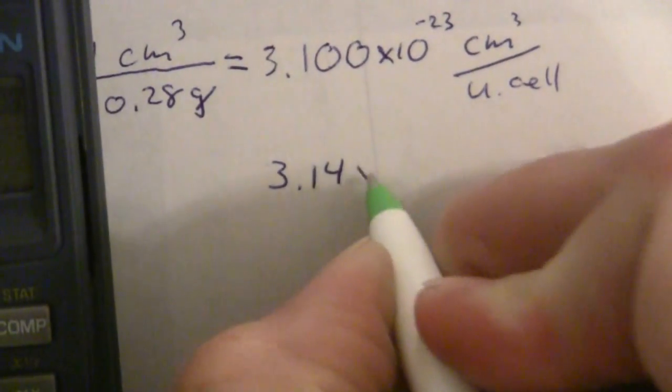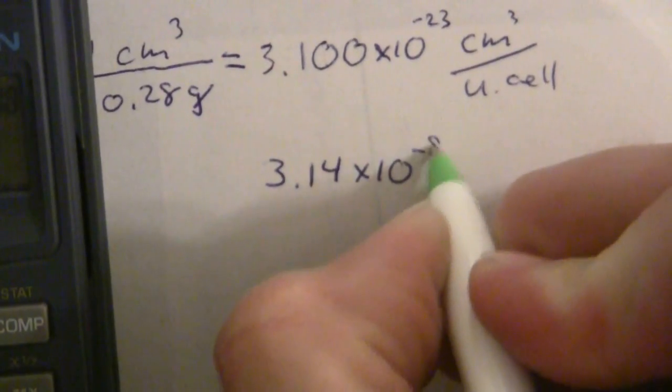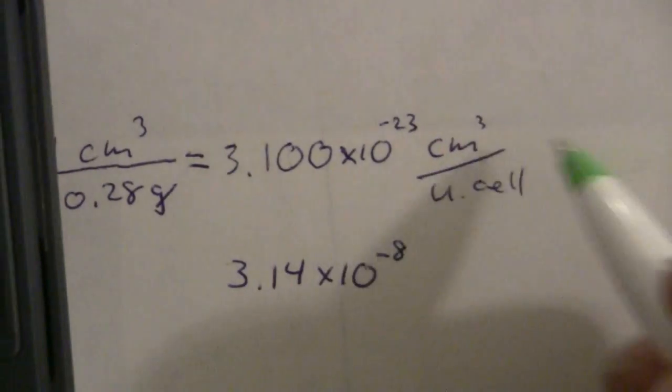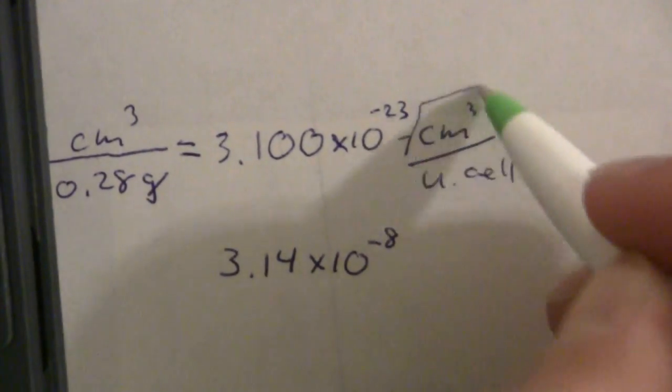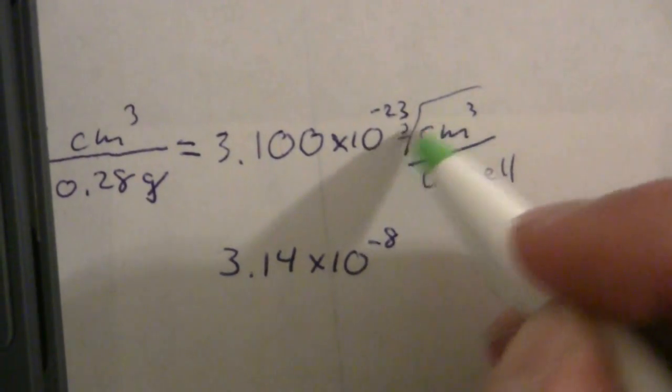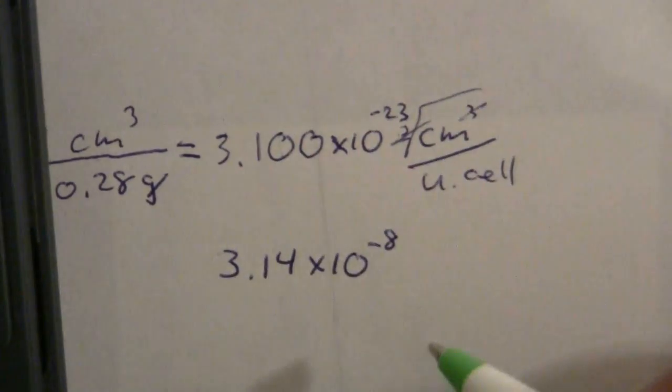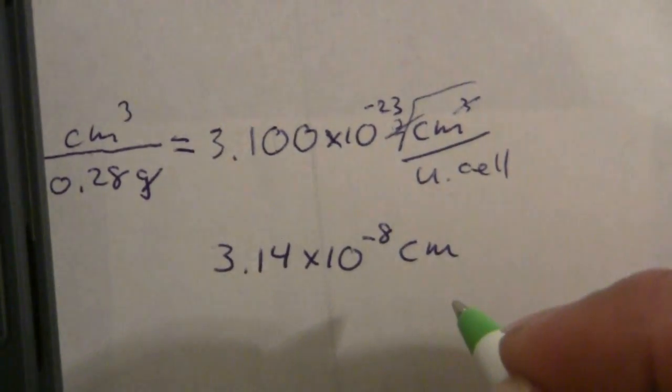3.14 times 10 to the negative 8th. And that is now I have taken the cube root of this so that cancels and I end up with centimeters. So that is centimeters per side of the unit cell.